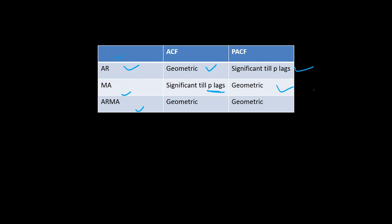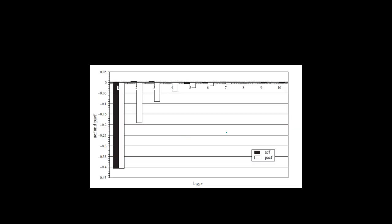In the ARMA process, both ACF and PACF behave similarly — they follow a geometric decay. Using these rules that we have tabulated, we will try to identify which time series process is associated with a particular ACF and PACF plot. So let us go to an example.